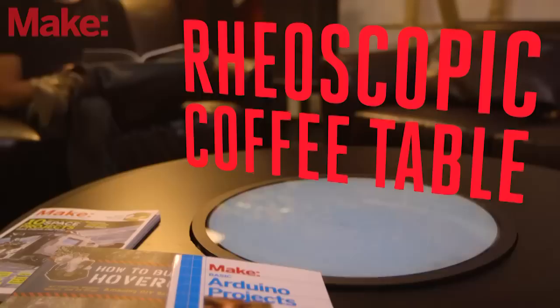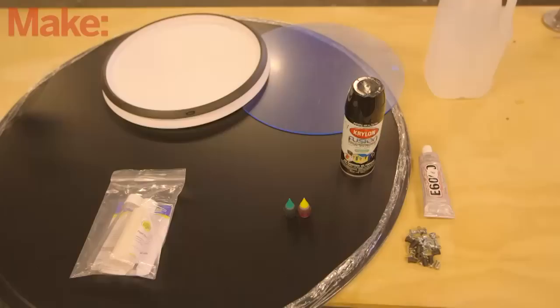In this weekend project by Ben Krasnow, you'll be able to build your own hypnotic cloud table by filling a cheap lazy Susan with rheoscopic fluid, and then dropping the assembled turntable into a modified coffee table from Ikea.